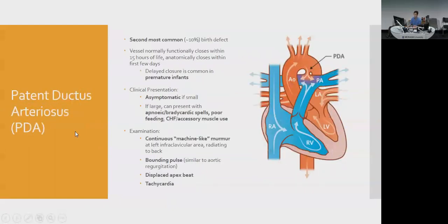Patent ductus arteriosus (PDA) is the second most common congenital heart defect. The ductus arteriosus is a shunt from the pulmonary artery to the aorta. After birth, the left heart has more pressure, creating backflow if the ductus doesn't close. Normally it closes within 15 hours and becomes the ligamentum arteriosum within days. However, especially in premature infants, it may not close — so if an MCQ says premature infant, think PDA. Small PDAs can be asymptomatic, but untreated cases cause apneic spells, poor feeding, and heart failure signs.